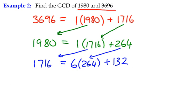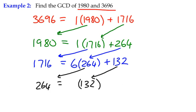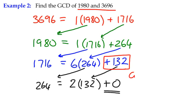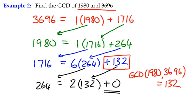Again the remainder is not zero, so we keep going. 264 moves over as the dividend and 132 becomes the divisor. 132 divides into 264 exactly two times with no remainder. We've reached a whole-number quotient with a zero remainder, so we stop. The greatest common divisor is the last non-zero remainder, which means the GCD of 1,980 and 3,696 is 132.